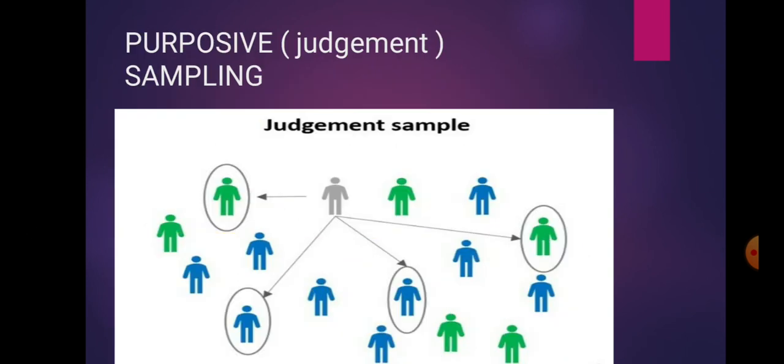Next is purposive, that is judgment sampling. You can see in the picture groups of people belonging to green and blue categories. In the first group there are people from blue and green. In the second group, four people from blue. In the third group there is green, then blue, then green again. The researcher selects samples based on their judgment.